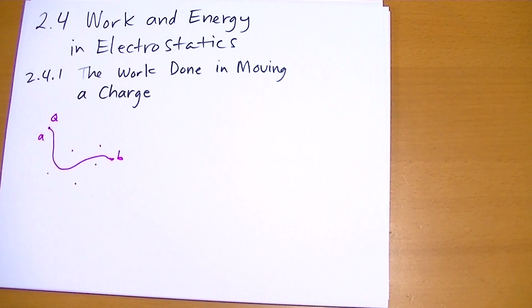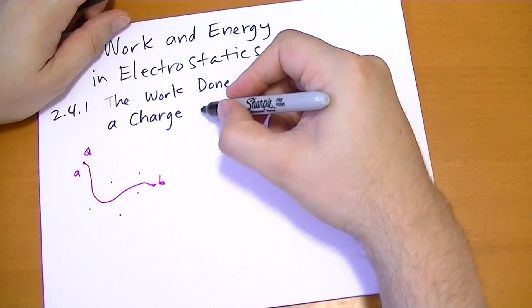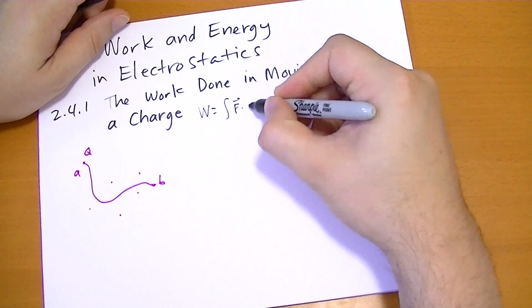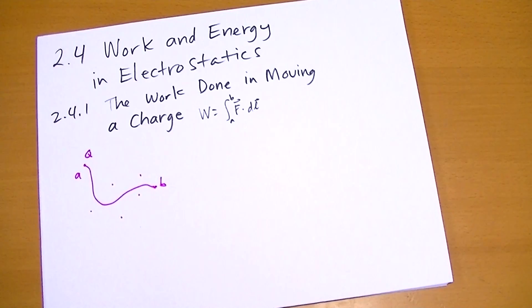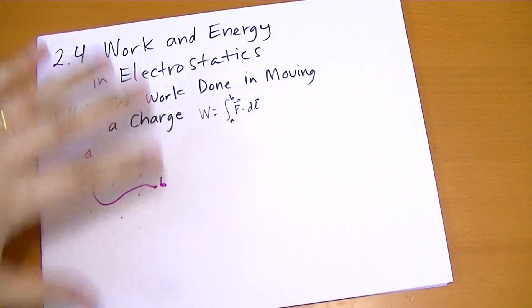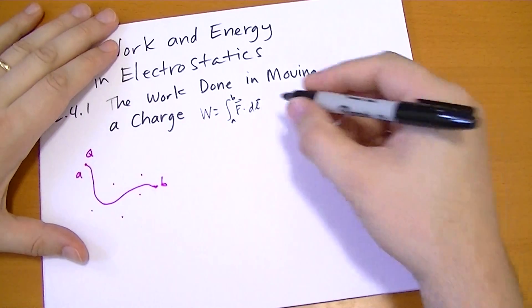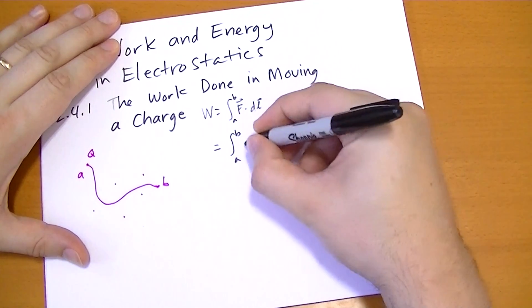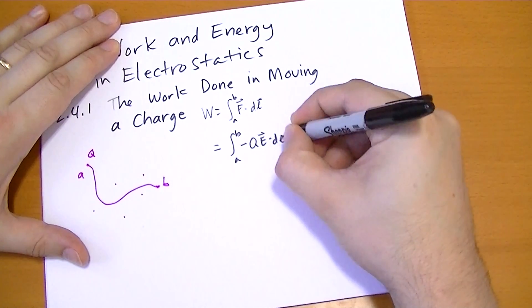The classical way to determine the work done to move that charge is we start with the formula: work equals the integral of the force dot dL, going from A to B. The particle experiences a force due to the other source charges of QE, so we have to exert a force in the opposite direction, minus QE dot dL, in order to move that particle.